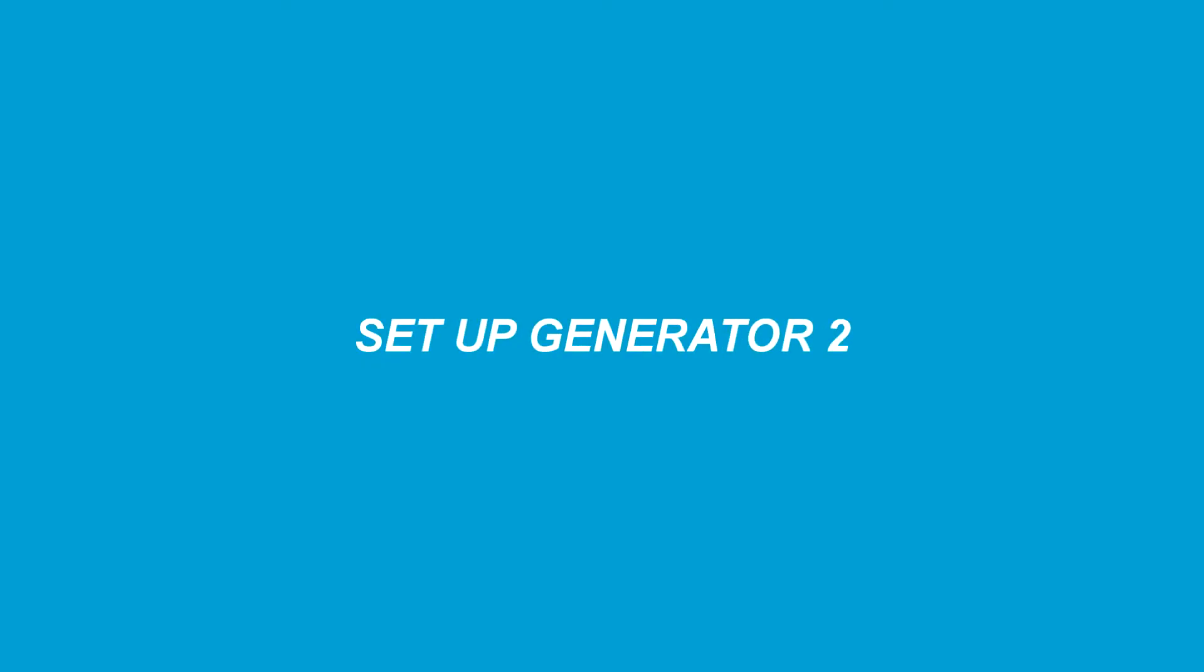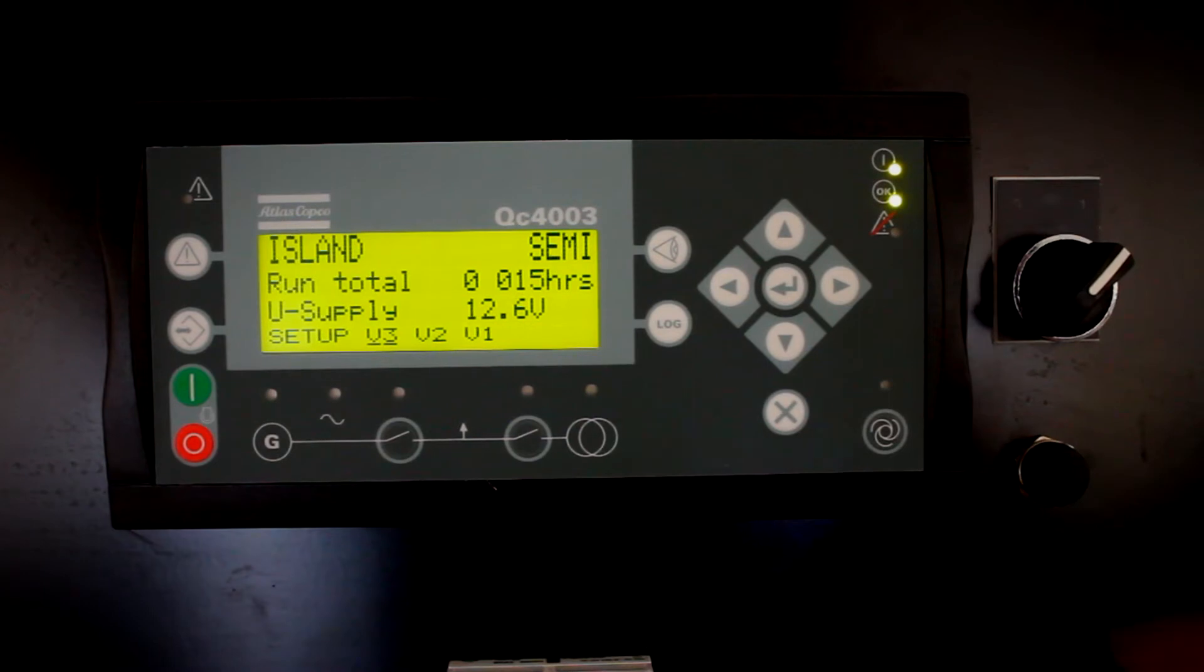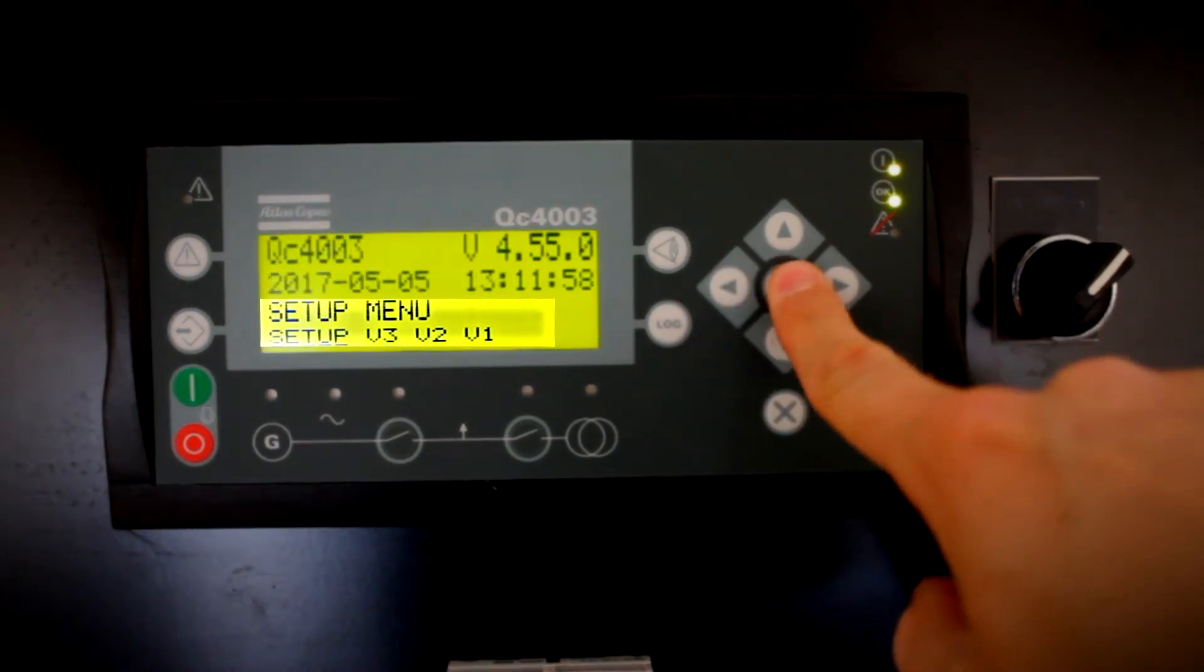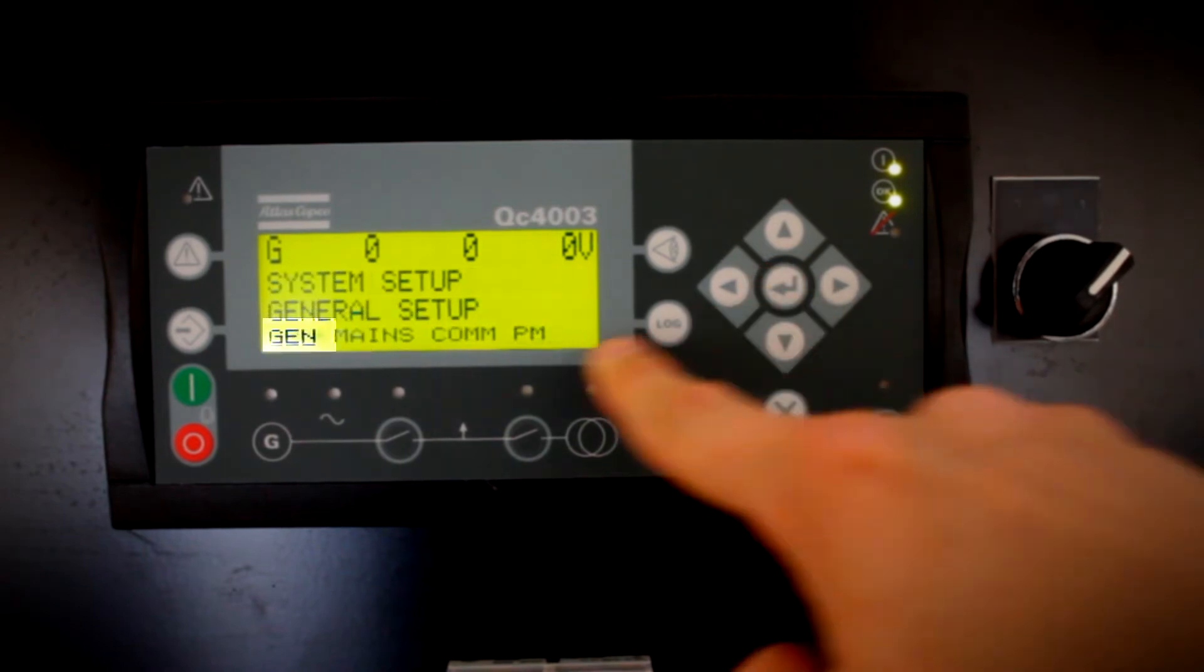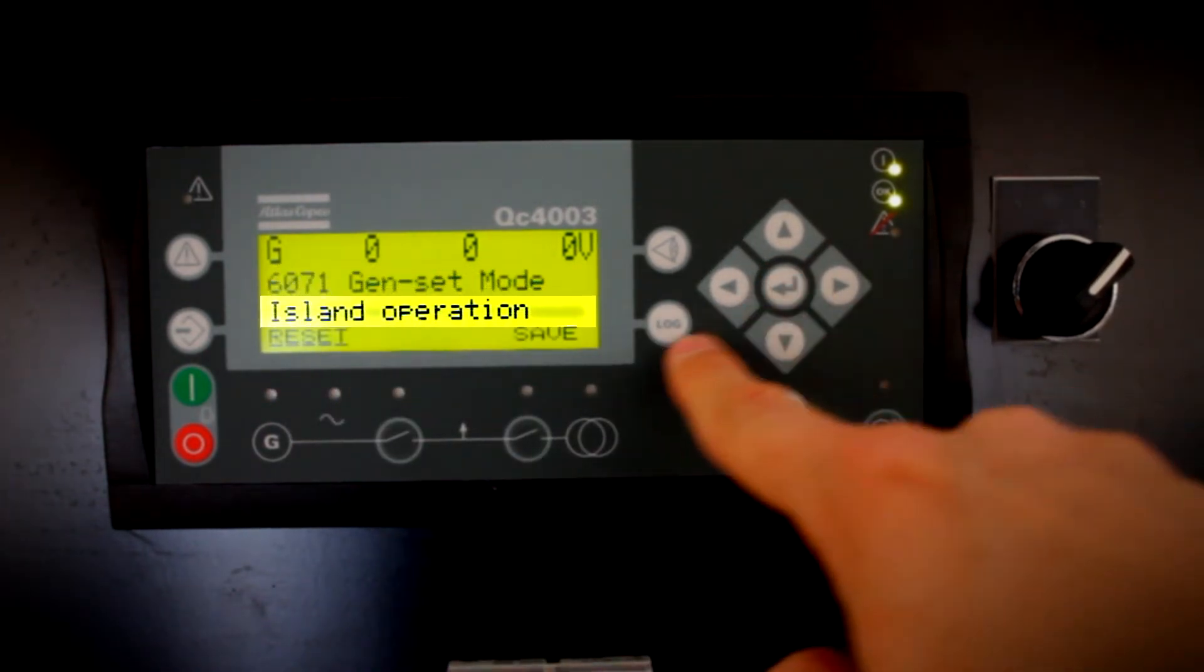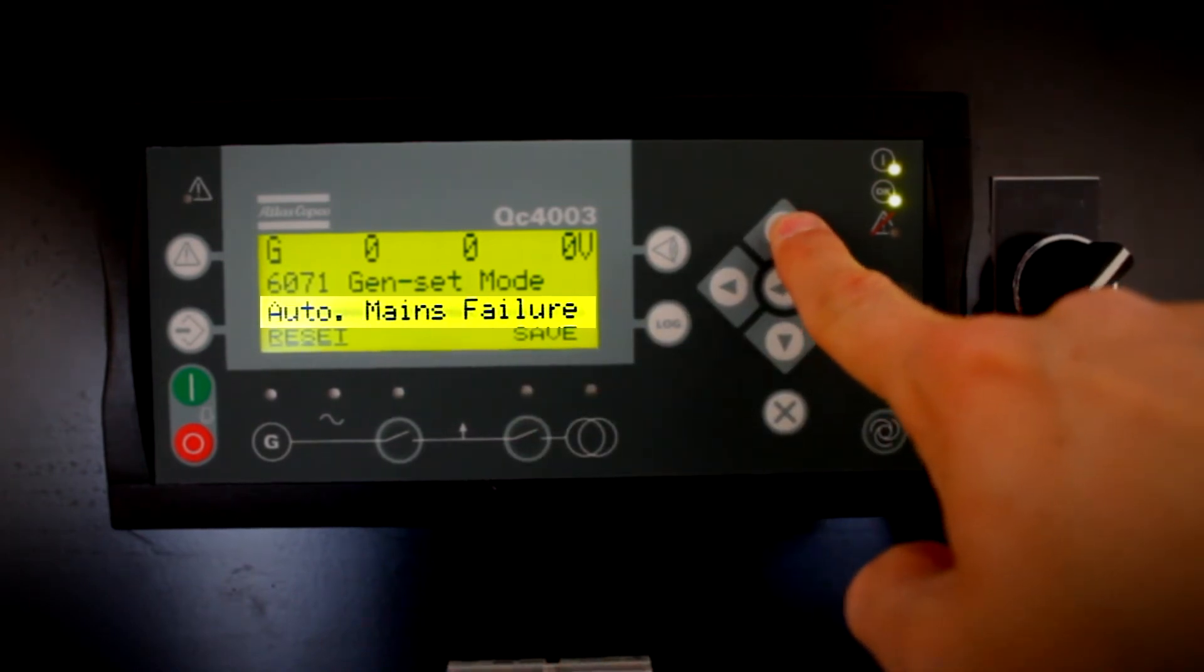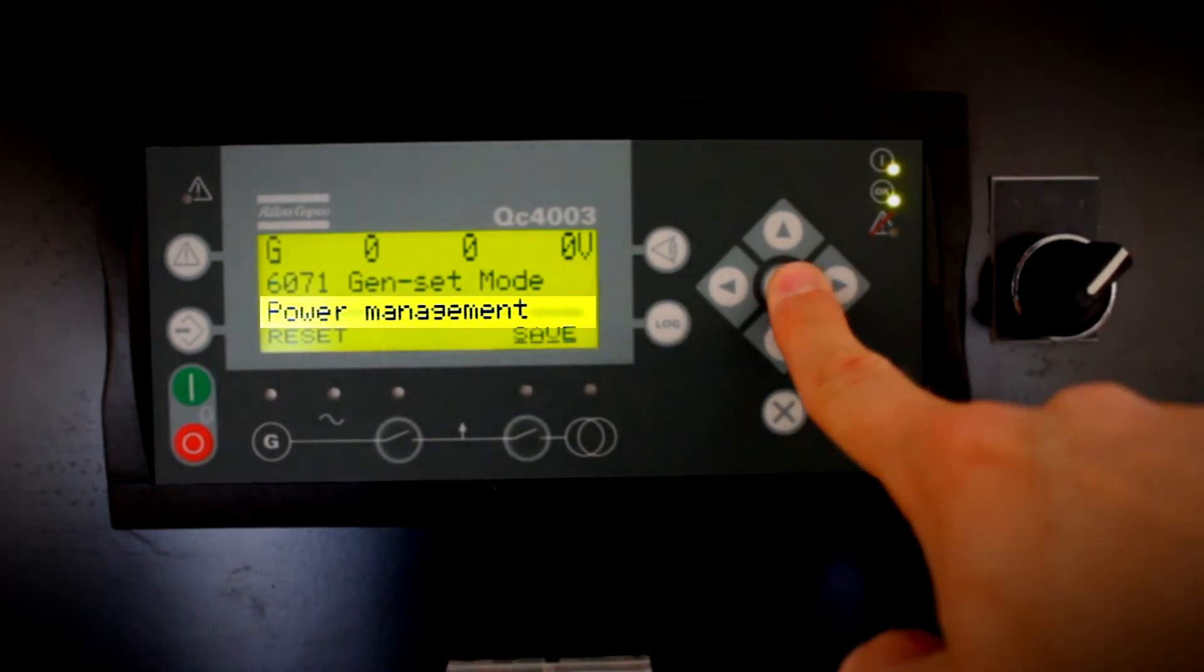Now we will repeat most of the steps at Unit 2. Activate Power Management at parameter 6070 through the menu by Setup, System, General. Enter the customer password if required. Scroll until you find Power Management and save. Good.